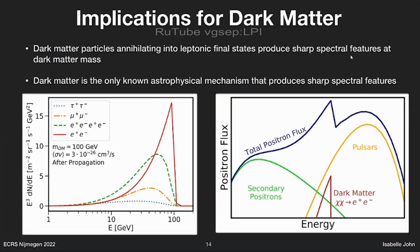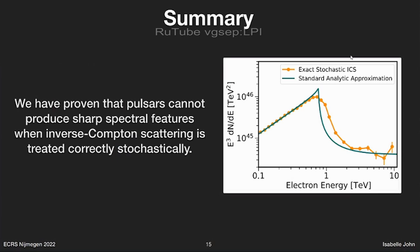Finally, coming back to dark matter: the situation is different because for pulsars, the sharp feature develops later as positrons cool. For dark matter, the sharp signal is introduced at the moment dark matter annihilates, so the origin of the sharp feature is quite different. This is why dark matter is not affected by this stochastic smearing — we still get sharp features from dark matter. This means dark matter is actually the only known potential source of sharp signals in the positron flux. In summary: if we treat inverse Compton scattering stochastically, pulsar models will not produce any sharp spectral features.